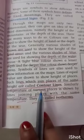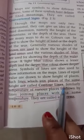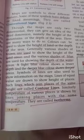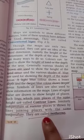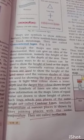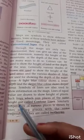Now mark the definition of contour lines, found on page number 17, and also mark the point on keys or symbols. Contour lines are lines which join places of the same height. Please mark it.